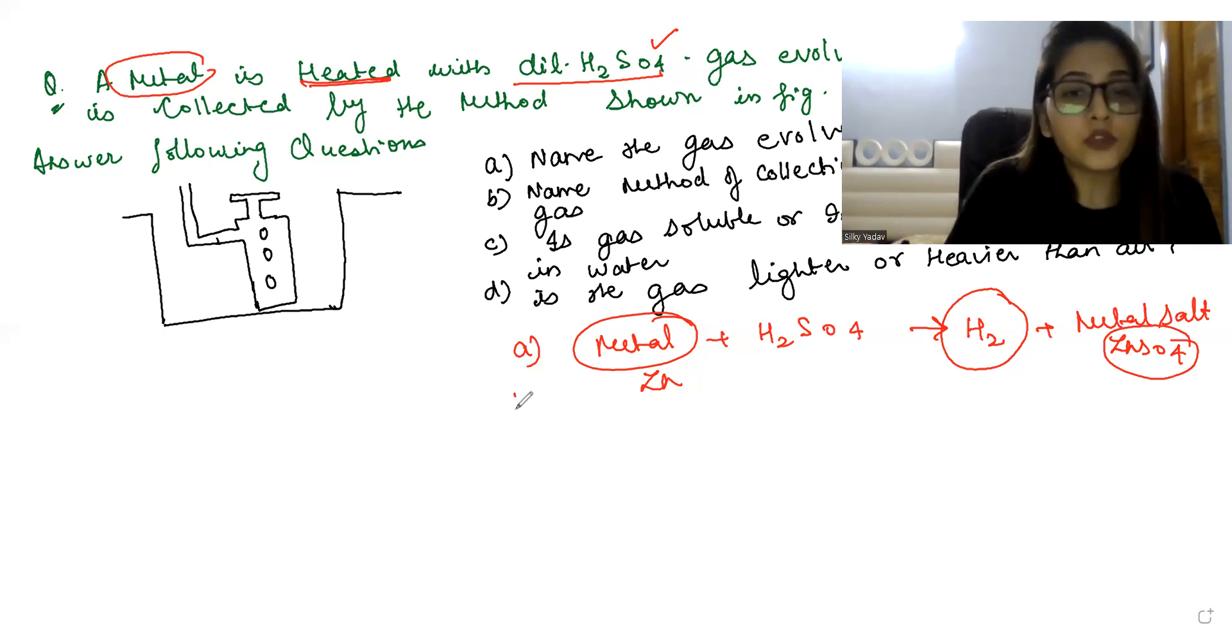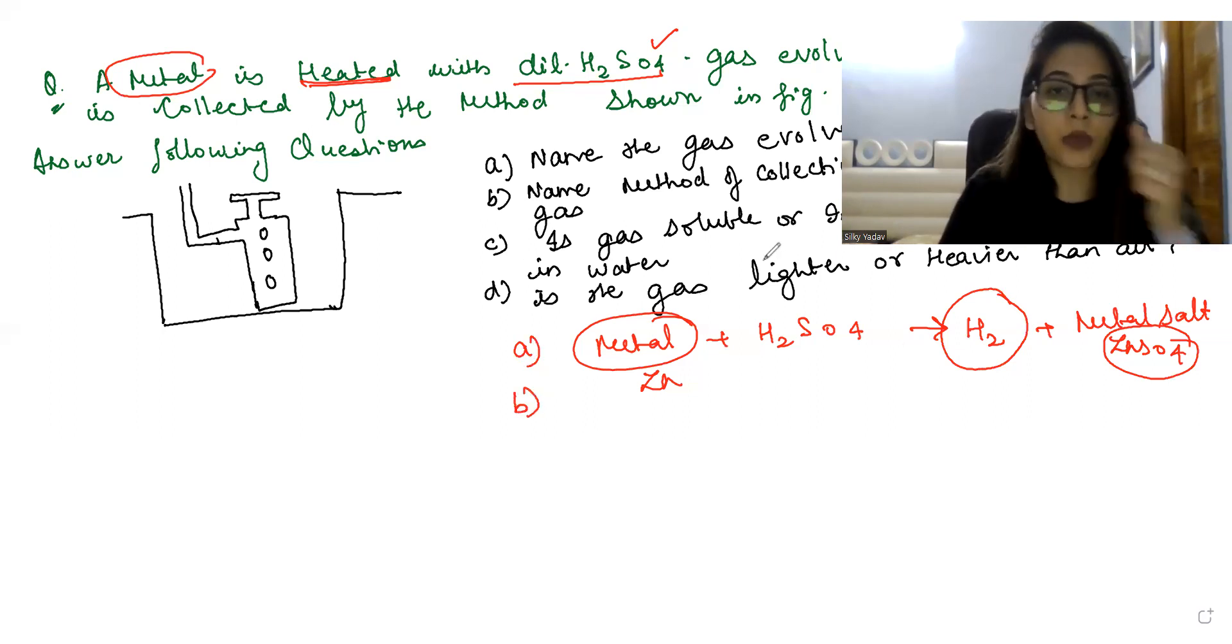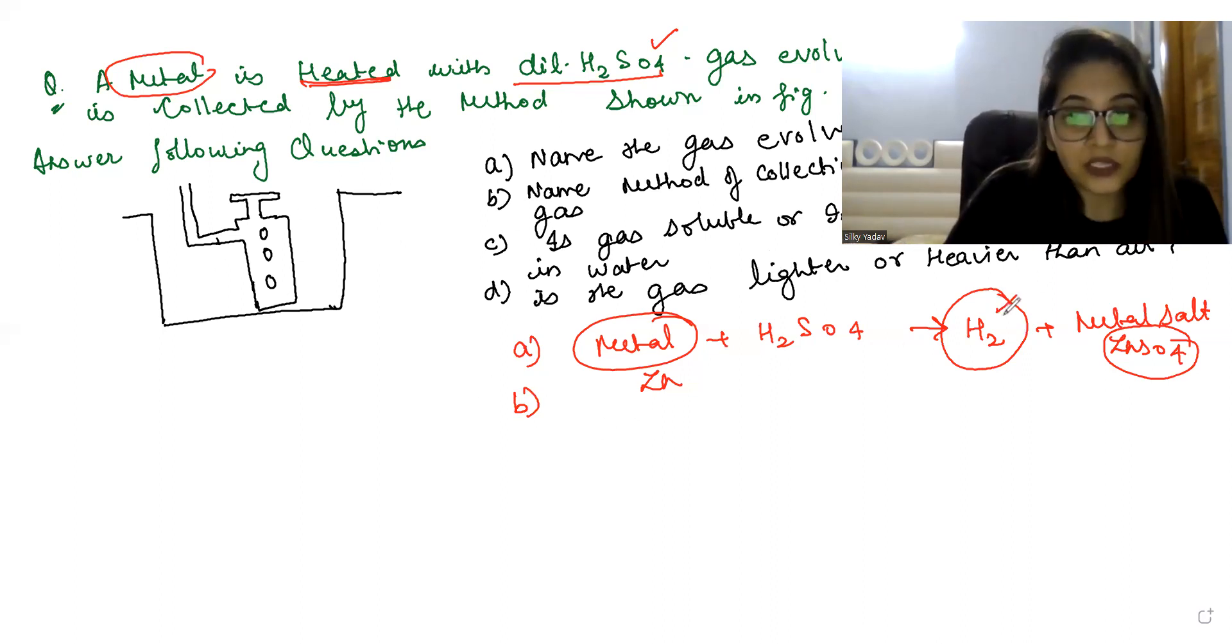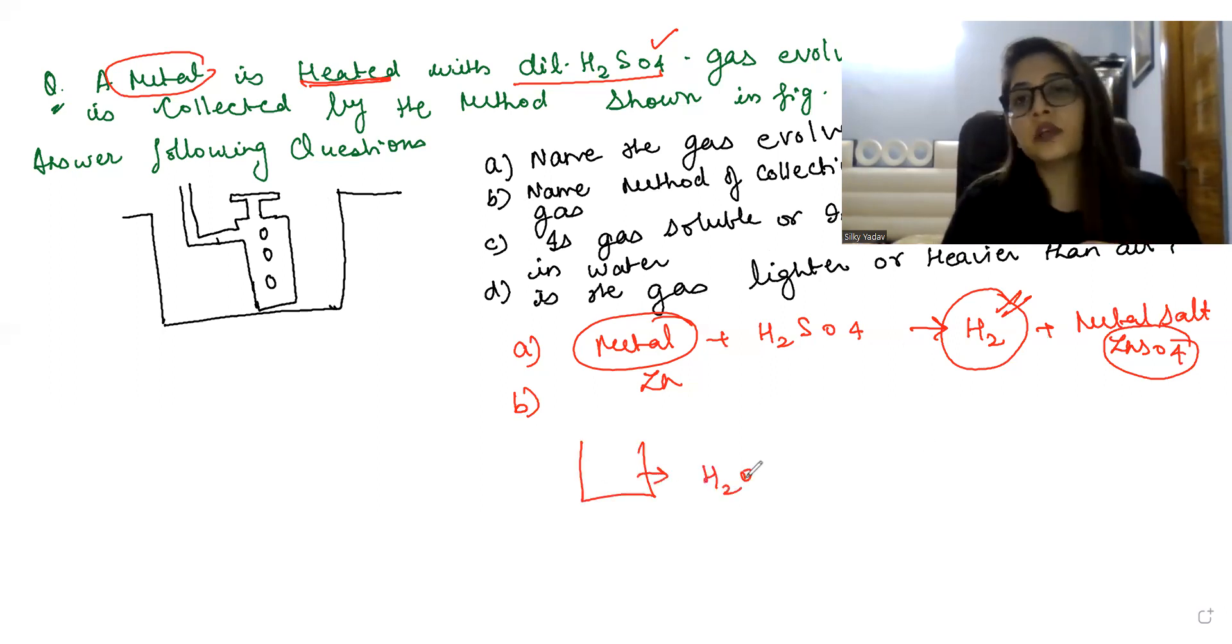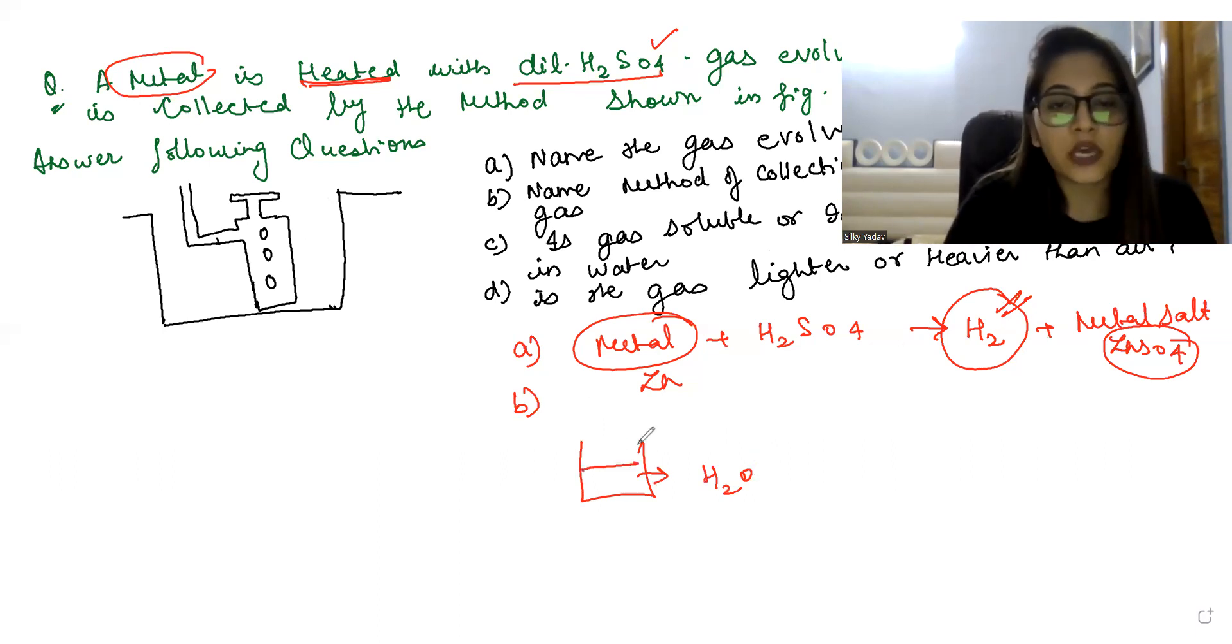Now the second part is asking us: name the method of collection of the gas. You know that if we are going to collect this hydrogen gas, it always gets collected by the displacement of the other thing in the downward direction. If you're collecting it over water, you know that generally we collect hydrogen gas over water because it's a lighter gas.